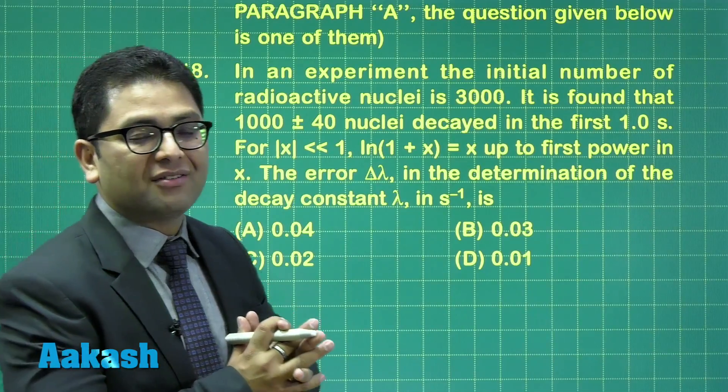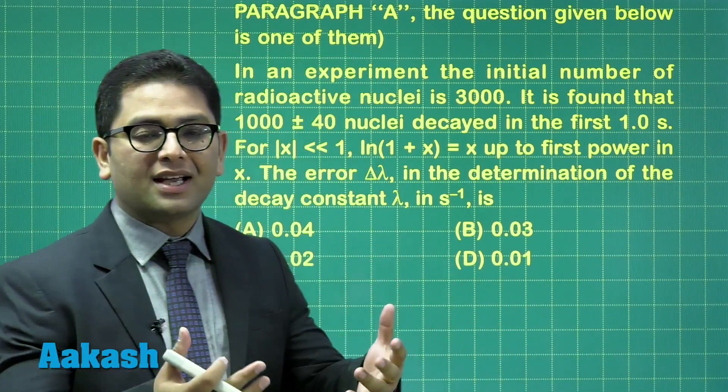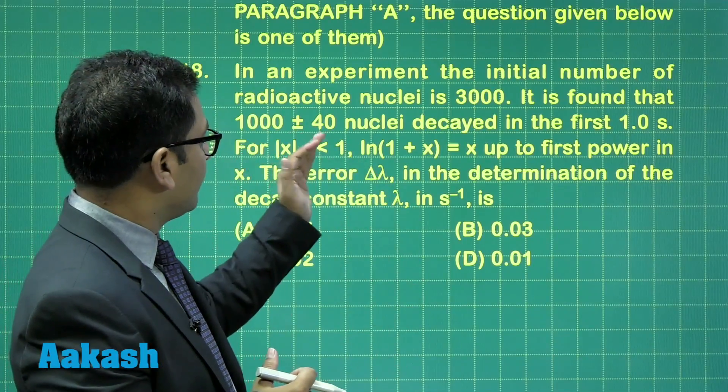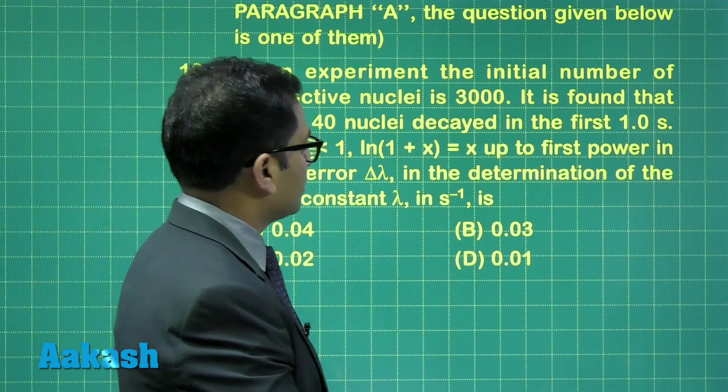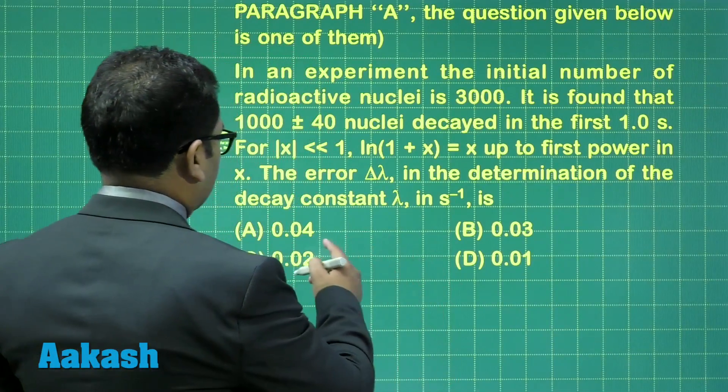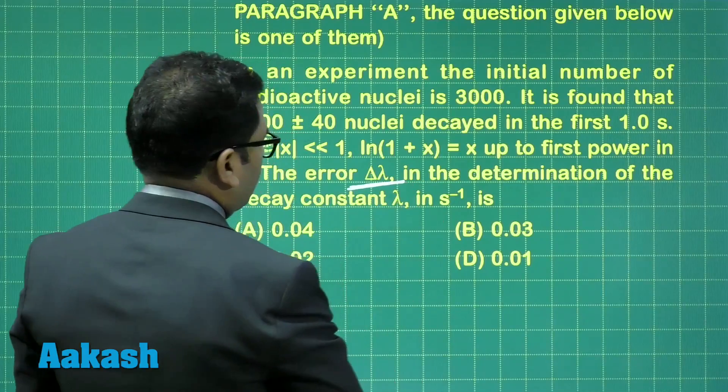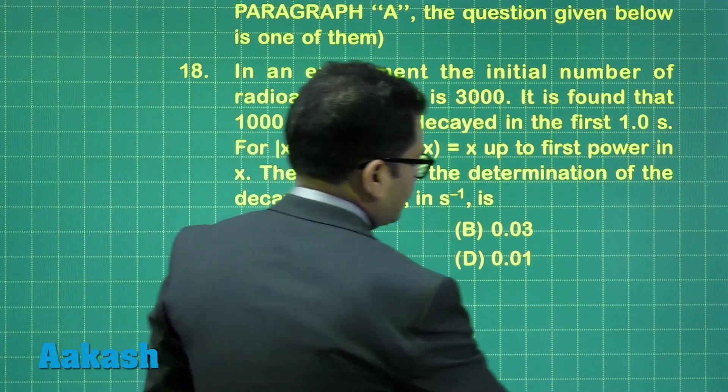Be careful. N naught e raised to the power minus lambda t is the number of nuclei remaining, while here, this is the decayed one. That's not a problem, you simply subtract by N naught. And we need to calculate the error in decay constant. So let's try to see.